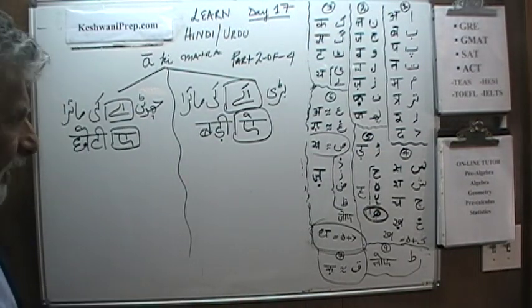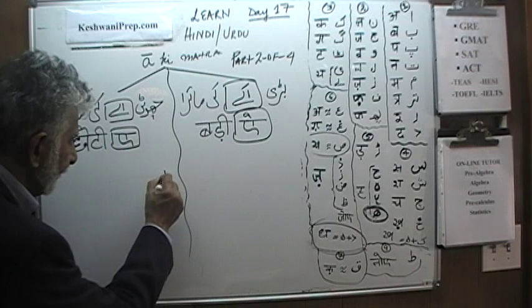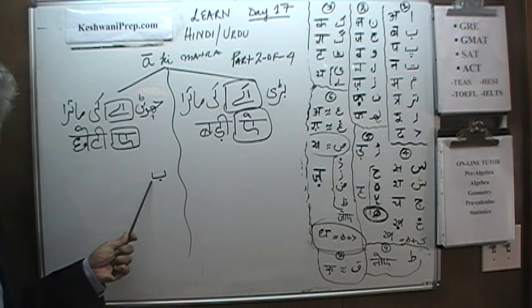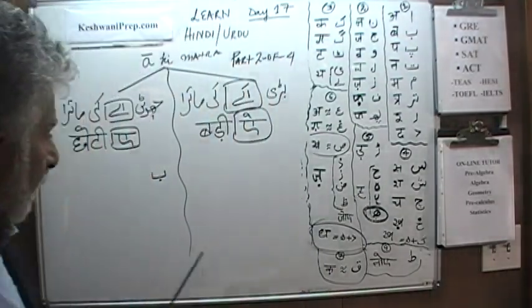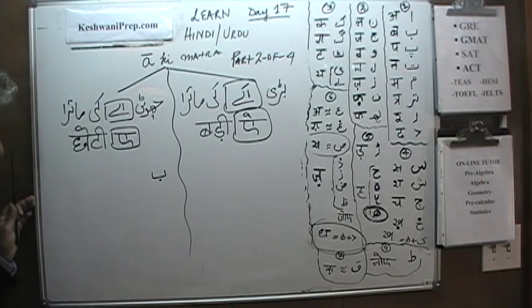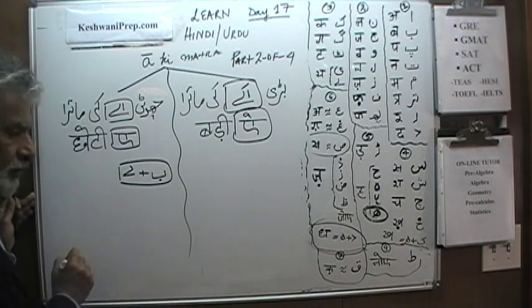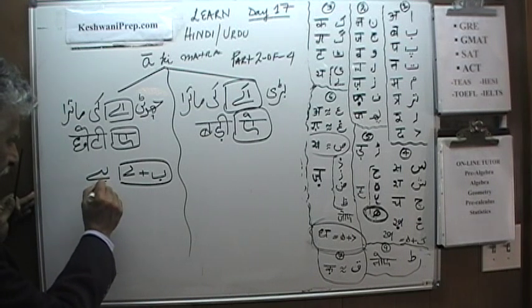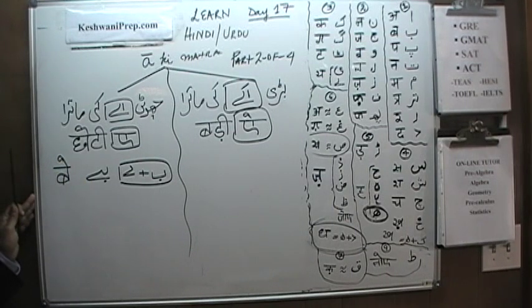So here's the recap. If you want to make an Eki Matra — for example, if you have a letter called B (I'll call it B, not 'be,' to avoid confusion) — and you want to convert the B sound into a 'baa' sound, you take a letter called Badi A and put them together. That converts it and it becomes 'baa.' In Hindi, you take the letter B, put a line on top of it — just one line — and that's a 'baa.'